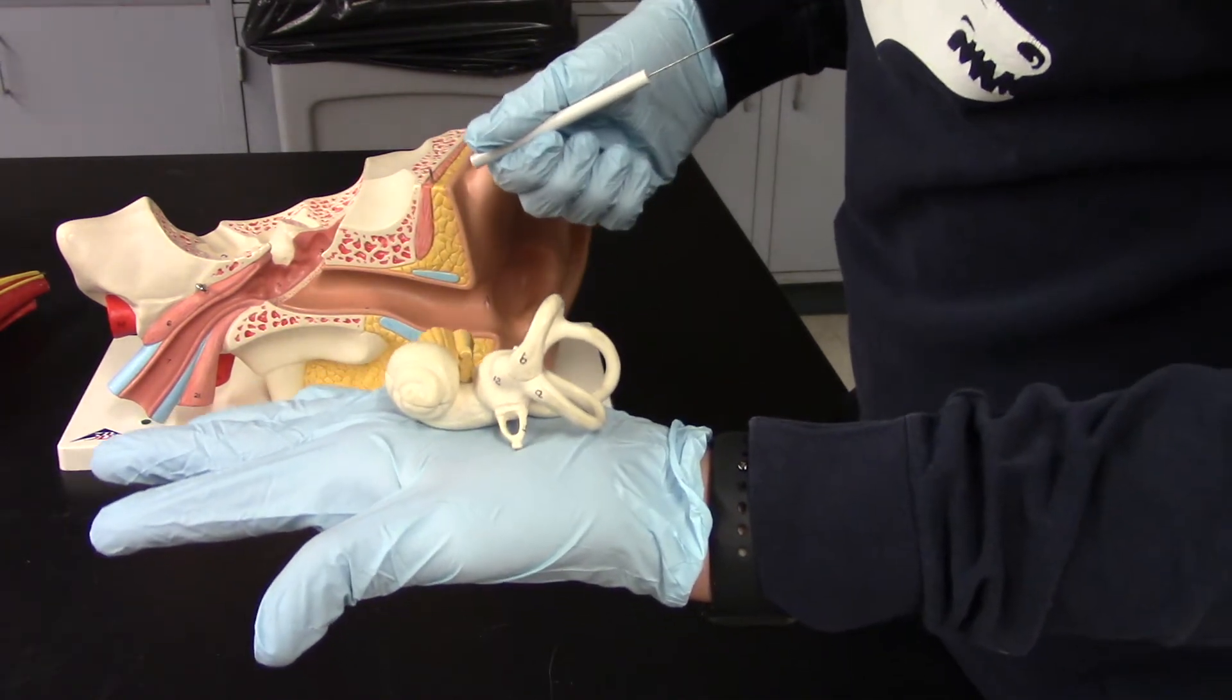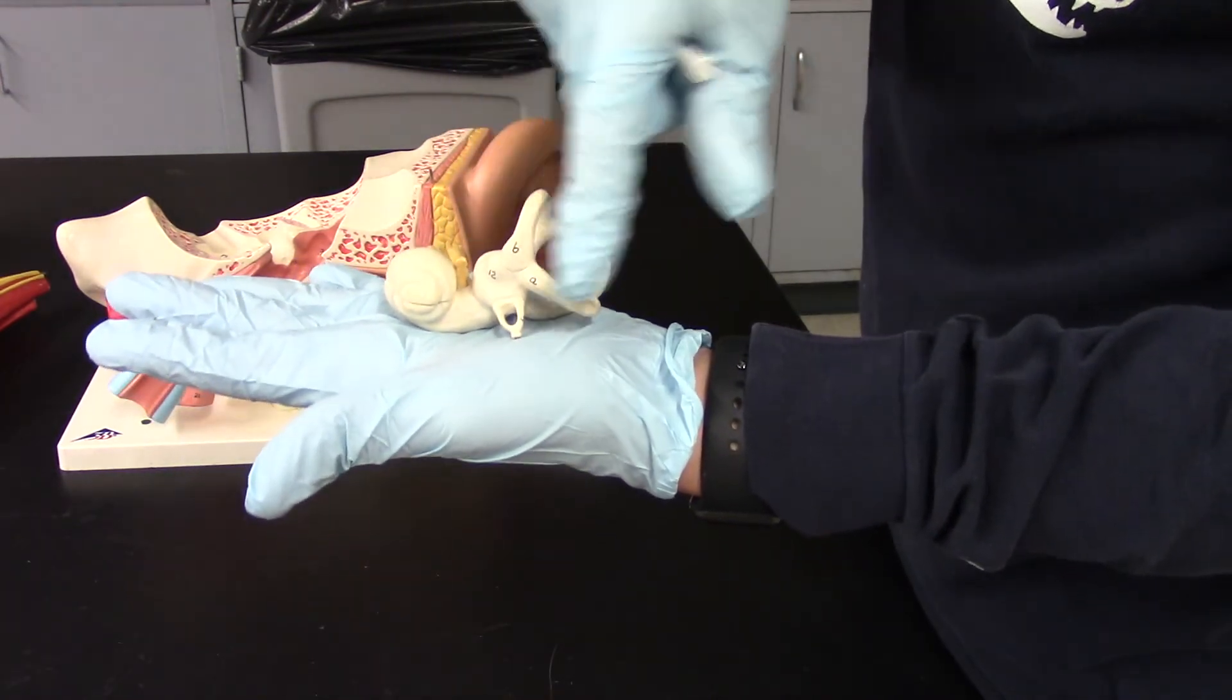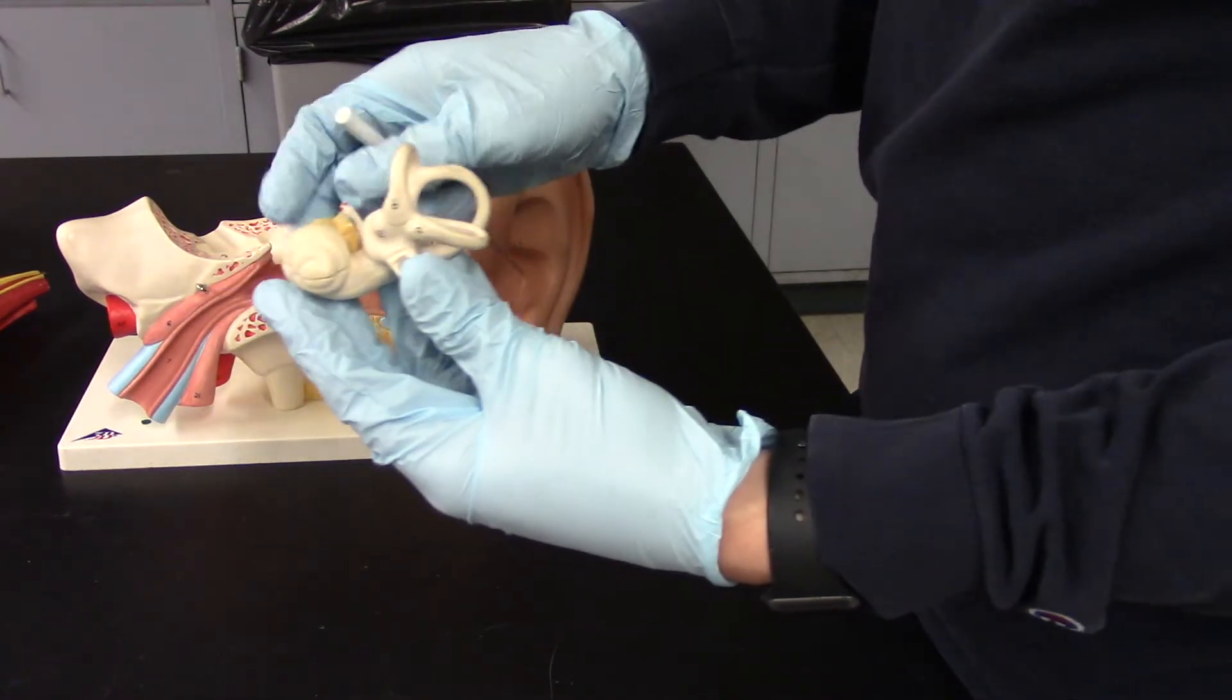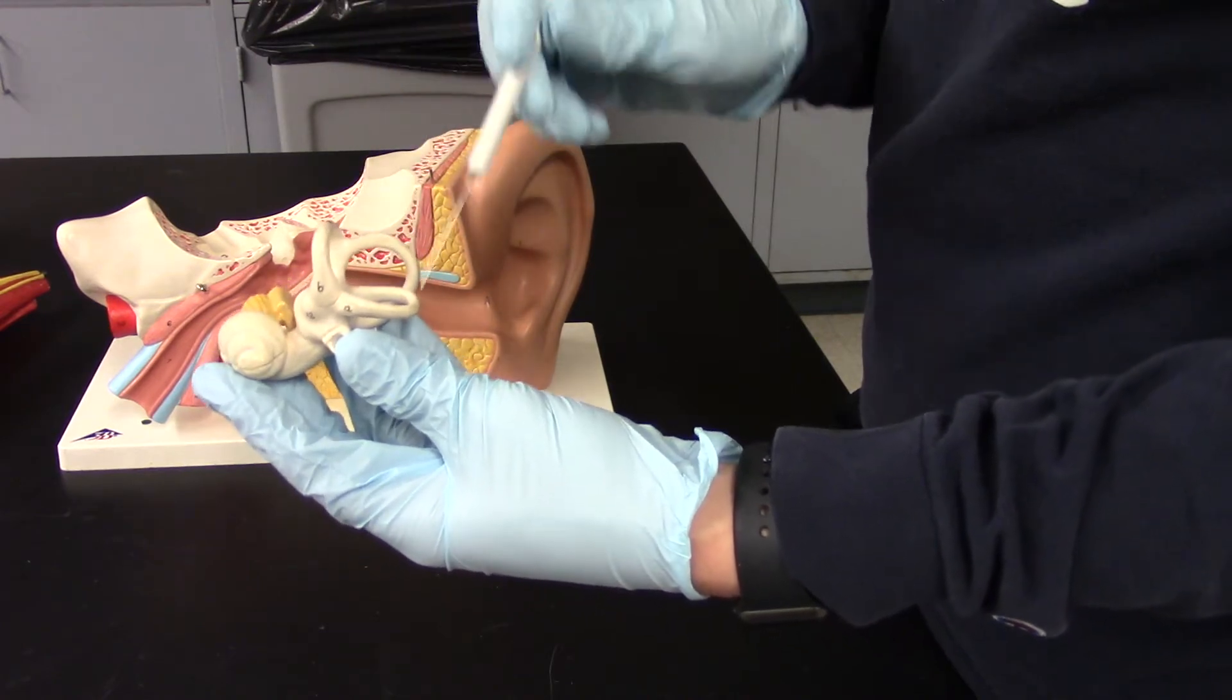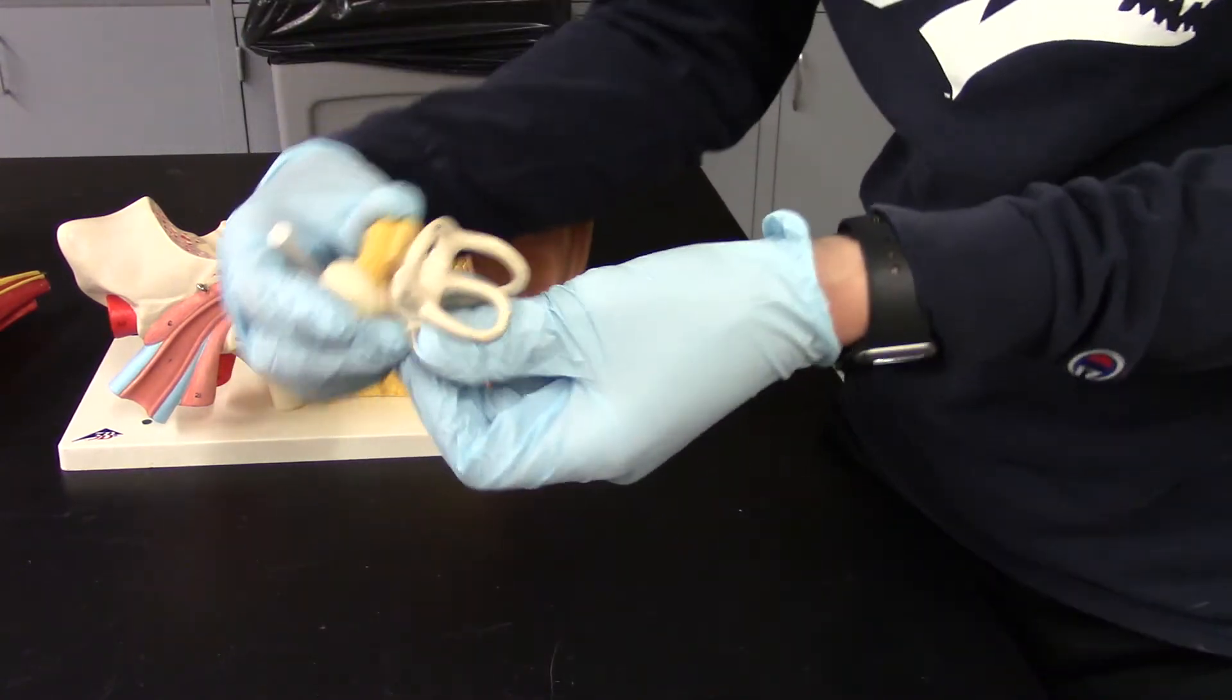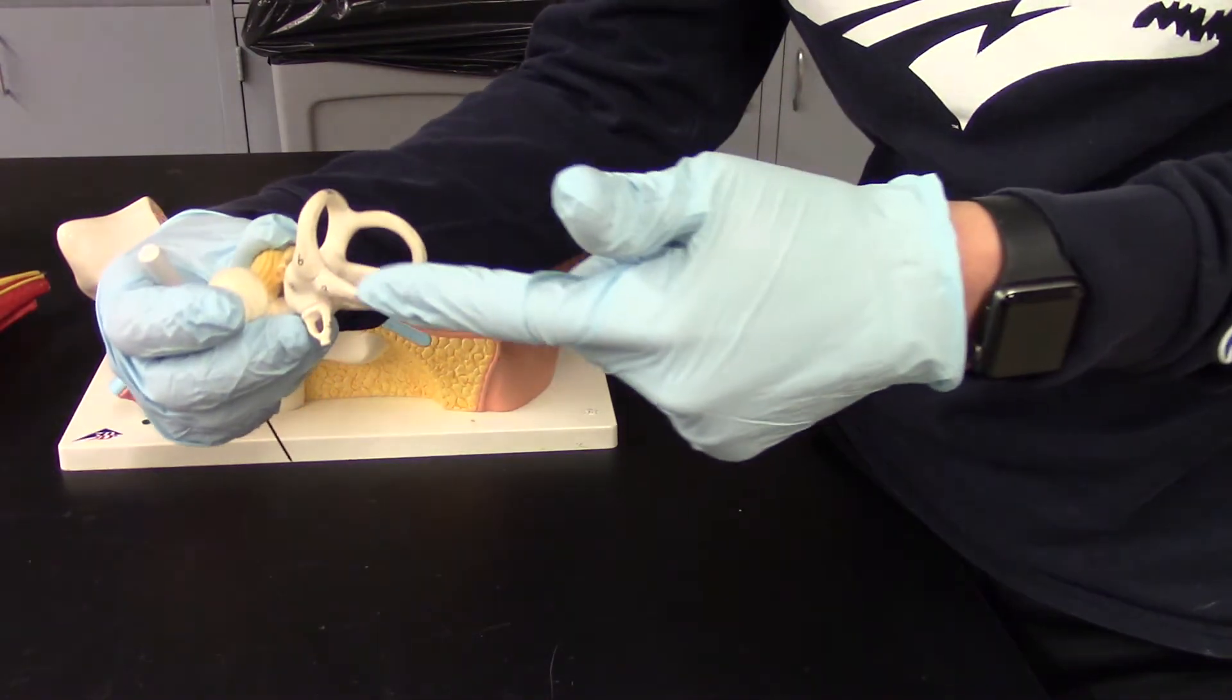Starting off, we have our vestibule. That is this entire structure in here. We have our anterior, posterior, and lateral semicircular canals. Anterior on top, posterior behind, lateral kind of sticking out. So again, anterior, posterior, lateral.